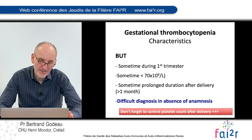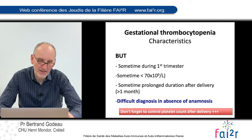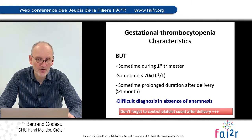In some cases, gestational thrombocytopenia can occur during the first trimester, as I mentioned previously. Sometimes it can be lower than 70,000 platelets per millimetre cube, sometimes with prolonged duration after delivery, and it's difficult to diagnose gestational thrombocytopenia in the absence of anamnesis, and particularly if it's the first pregnancy.